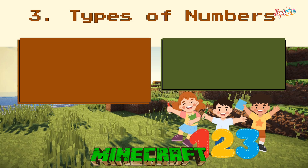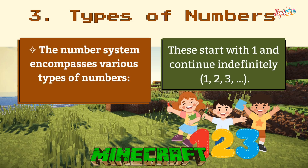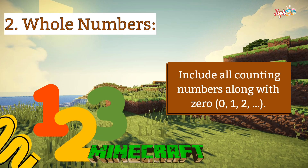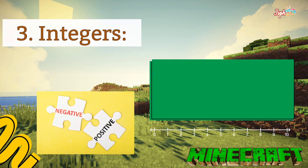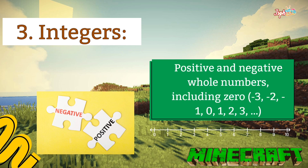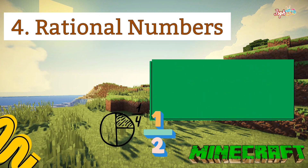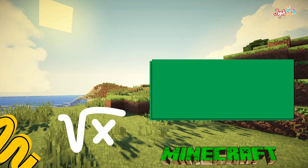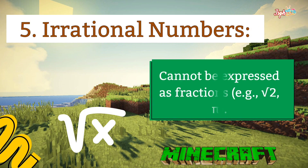For types of numbers, the number system encompasses various types of numbers. First, counting numbers start with 1 and continue indefinitely, like 1, 2, 3, 4, etc. Second, whole numbers include all counting numbers along with 0. Integers are positive and negative whole numbers including 0. Rational numbers are expressible as fractions, and irrational numbers cannot be expressed as fractions.